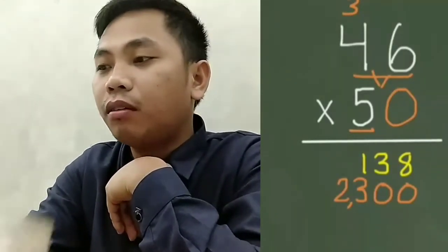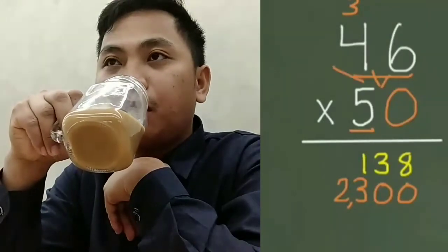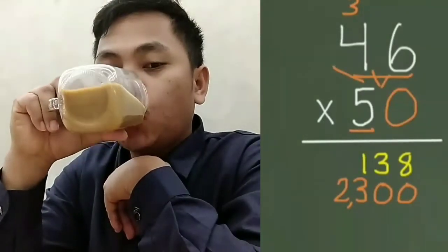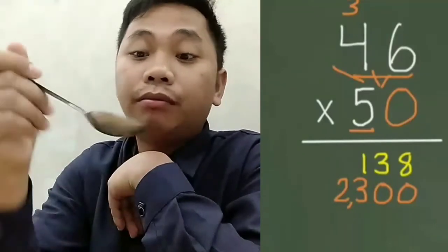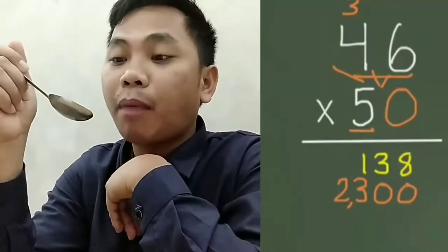Once again, if we had more digits, we could keep multiplying the 5, but we are done. So now, we need to add our two parts, our ones and our tens.